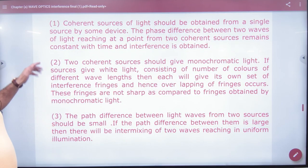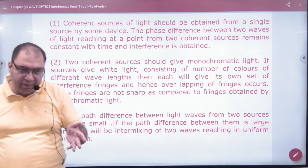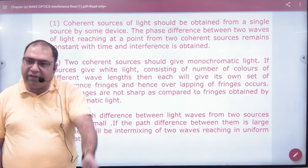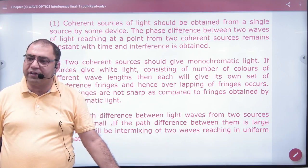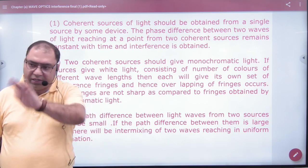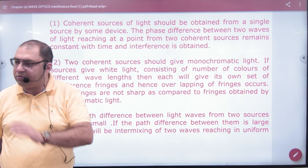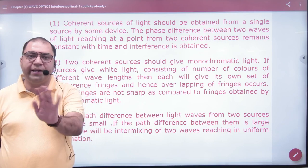Two coherent sources should give monochromatic light. White light should not be used because in white light there are 7 shades. The 7 shades have 7 wavelengths. If it interferes with the other 7 wavelengths, then there will not be a pattern. Because there is an overlapping pattern, you will not see the darkness in it. So white light will not be used.